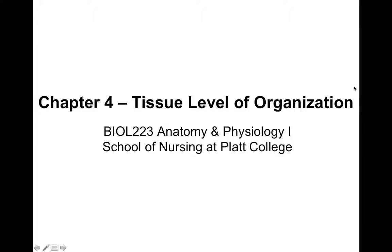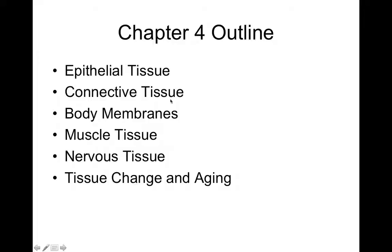We're going to talk about the tissue level of organization, so tissues in the human body. In this chapter, we're going to review epithelial tissues, connective tissues, different body membranes, what a membrane is and the different types. Then we'll wrap up with muscle, nervous tissue, and some ideas of aging within tissue as well.